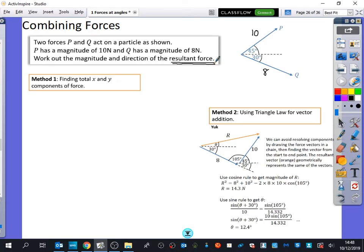Work out the magnitude and direction of the resultant force. So this is where vectors can be useful because resultant force, we could even do this without vectors, but this is just a nice technique. If we were going to do it without vectors, what we could do is find out how much of P and Q was going to the right. We could add them up and that would be our force going to the right.